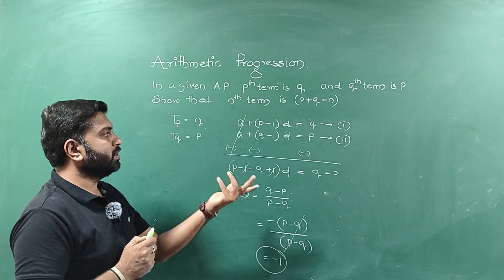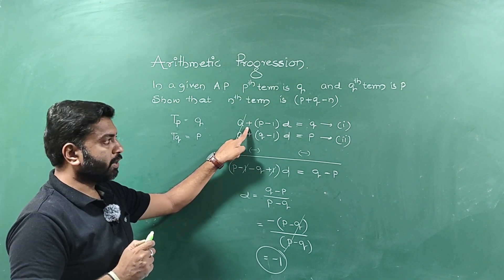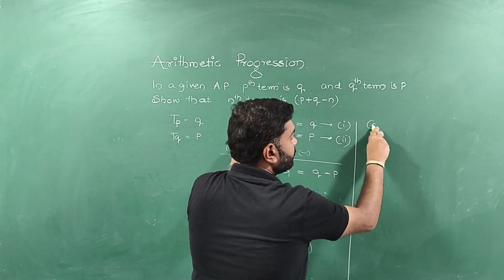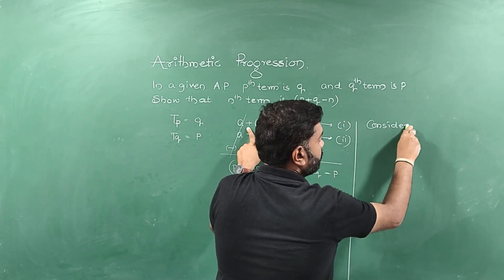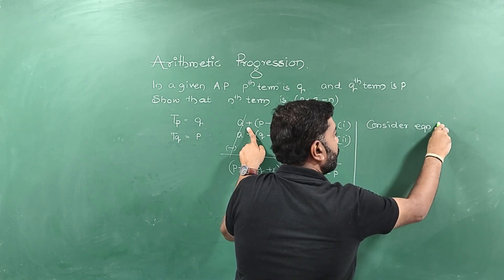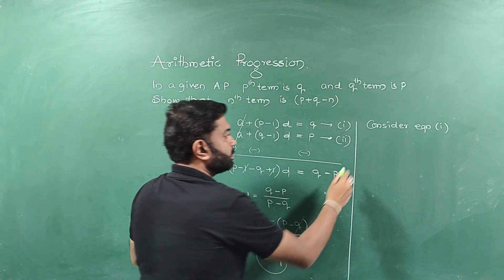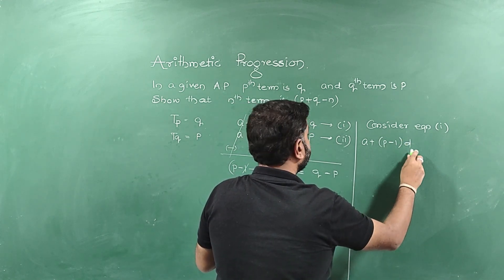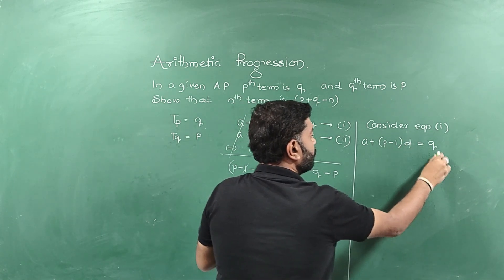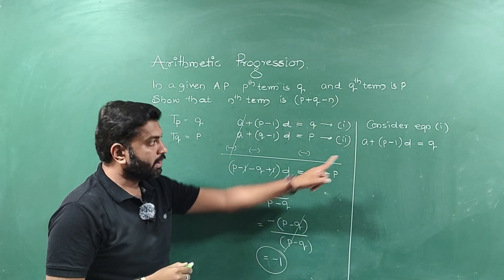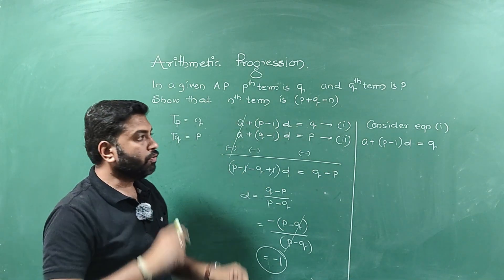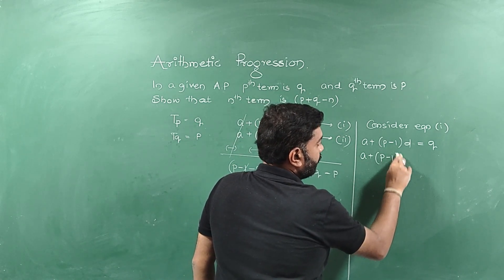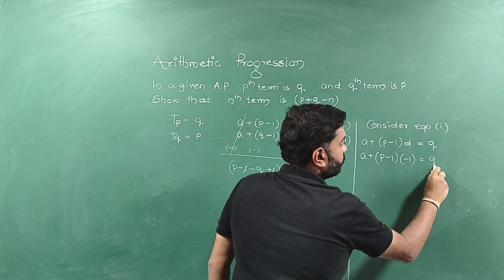I want to calculate A next. So consider any one equation. Better, can I go for the first equation? Consider equation 1 which is A plus P minus 1 into D is equal to Q. Let's try to substitute the value of D to calculate the value of A. So A plus P minus 1, D value is minus 1, is equal to Q.